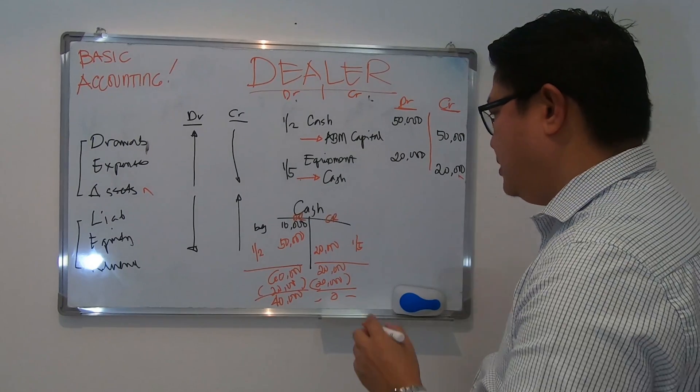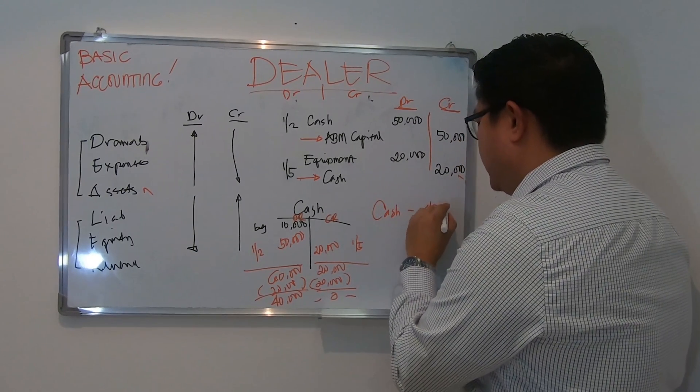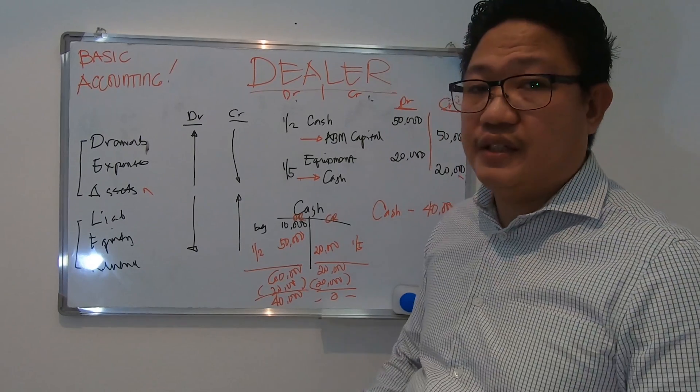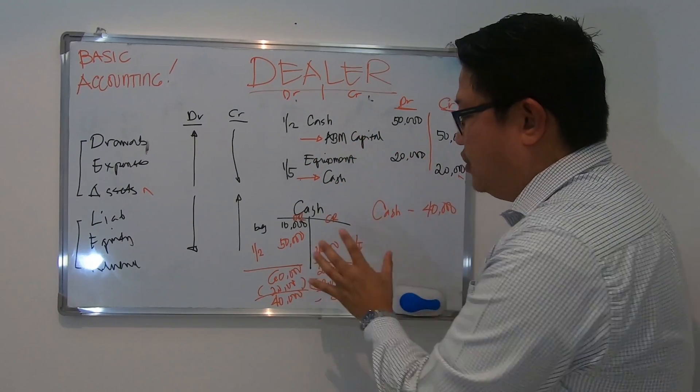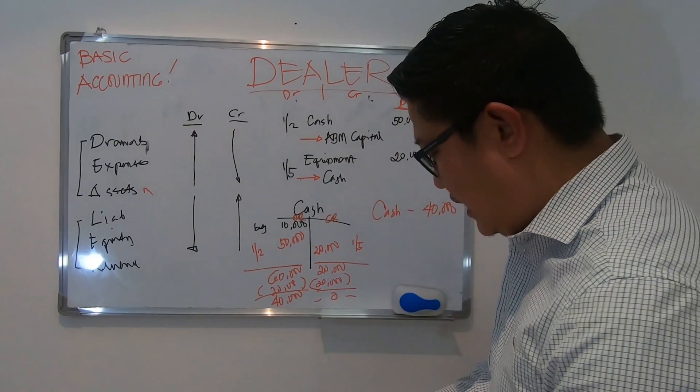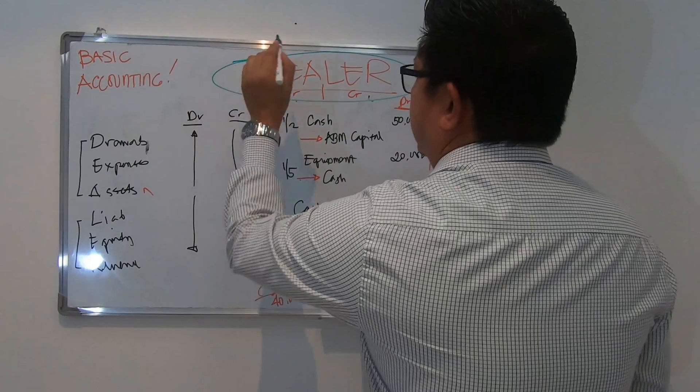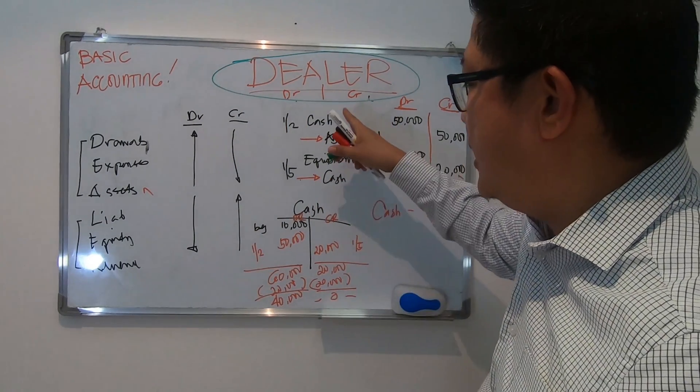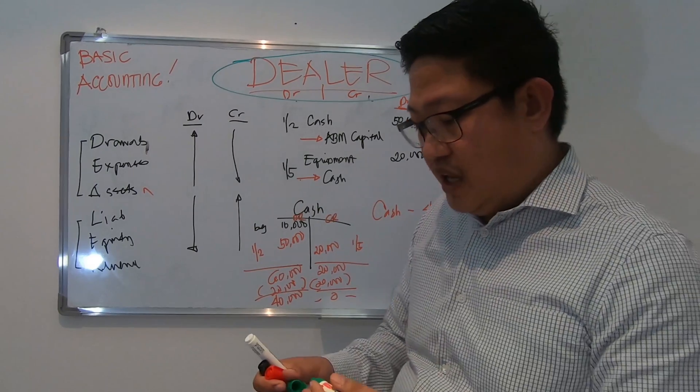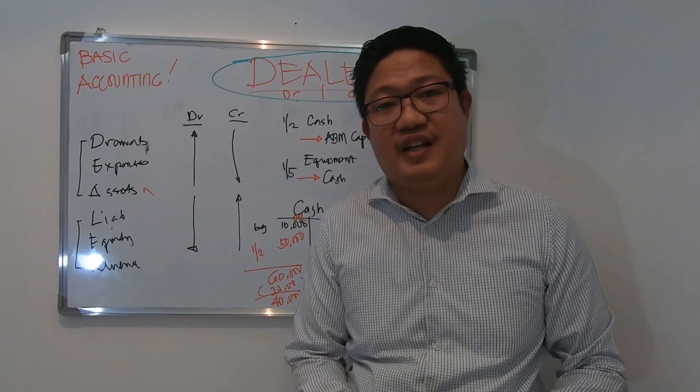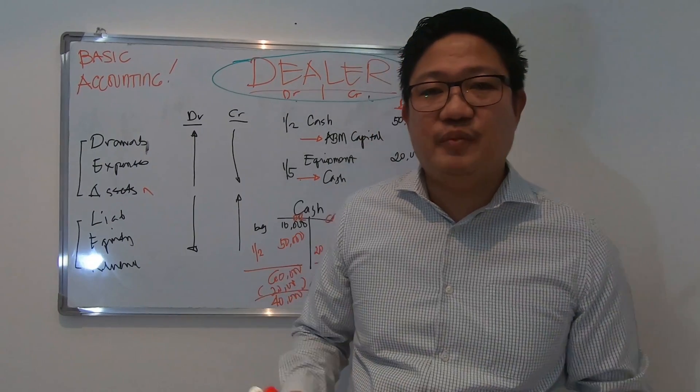So if you're preparing the financial statement or the balance sheet or statement of financial position, your cash balance should be 40,000 under current assets along with the other assets. Don't worry about this entry, in the next videos we will discuss the concept of entries and also the T accounts. Please always remember DEALER. This is the basic concept of debit and credit. From basic accounting to advanced accounting, you should remember this because you will use this concept in your journey to be an accountant or certified public accountant or any accounting related courses. Thank you for watching, I'll see you in my next vlog. Bye bye.